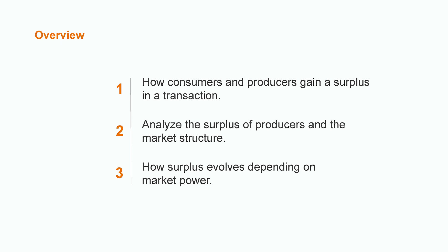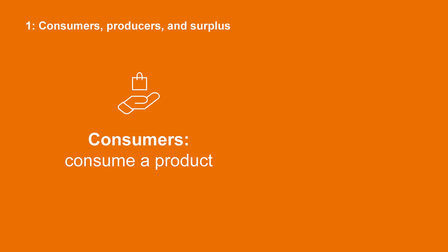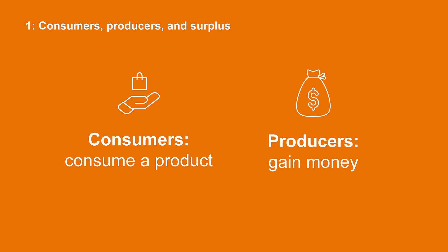Finally, we will see how this surplus evolves depending on market power. Consumers and producers gain a welfare out of a transaction. In general, consumers get to consume a product. Producers get to gain money.